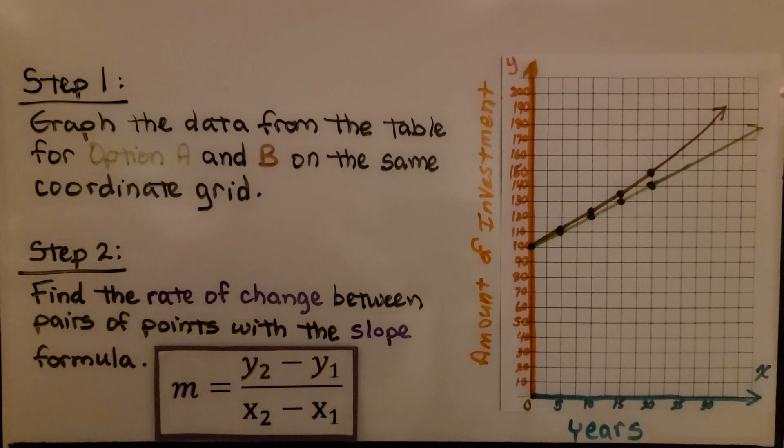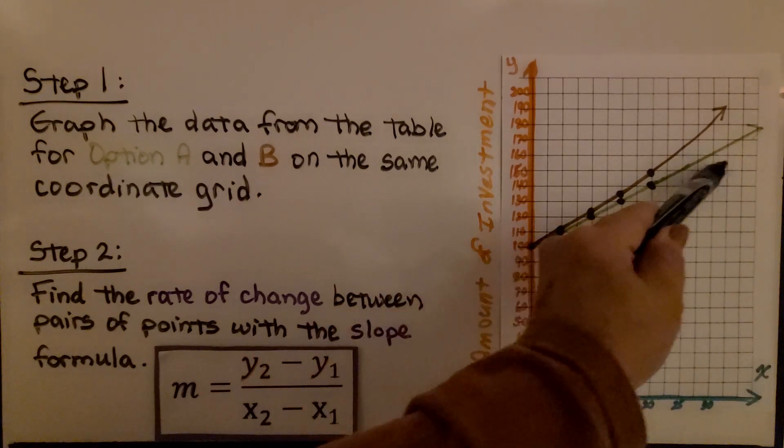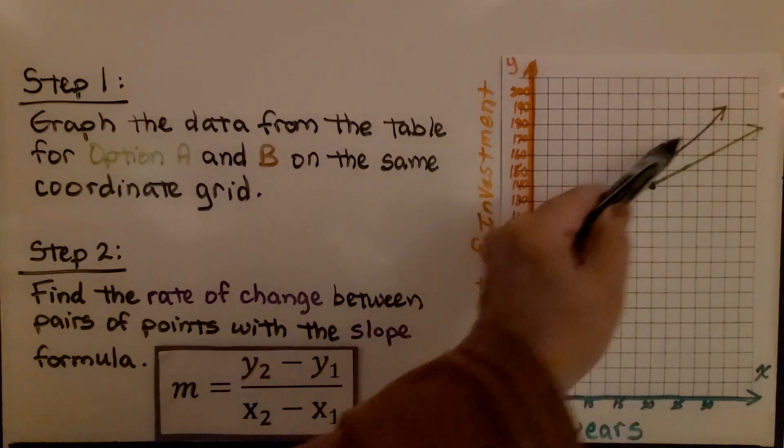So the first step is we graph the data from the table for option A and B on the same coordinate grid. You can see we have option A in the green and option B in the brown.